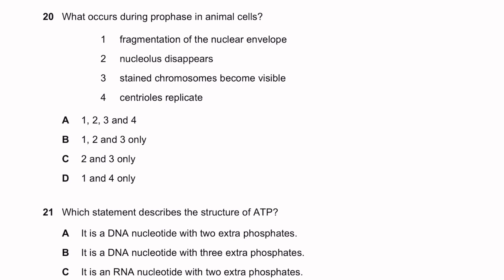Question twenty: what occurs during prophase in animal cells? Fragmentation of the nuclear envelope, disappearance of the nucleolus, and stained chromosomes becoming visible — all correct. Centrioles replicating is not correct for prophase; centrioles replicate during G2 phase. During prophase, centrioles (as part of centrosomes) migrate towards opposite poles — the movement happens in prophase, but the replication itself occurs in G2. So the correct events are 1, 2, and 3 — letter B.